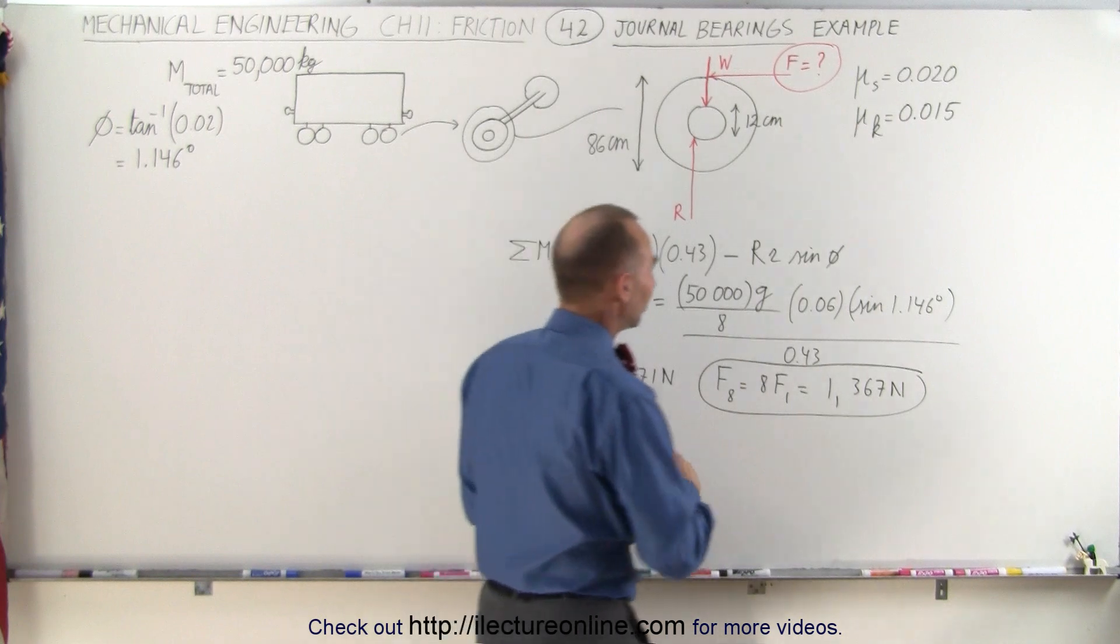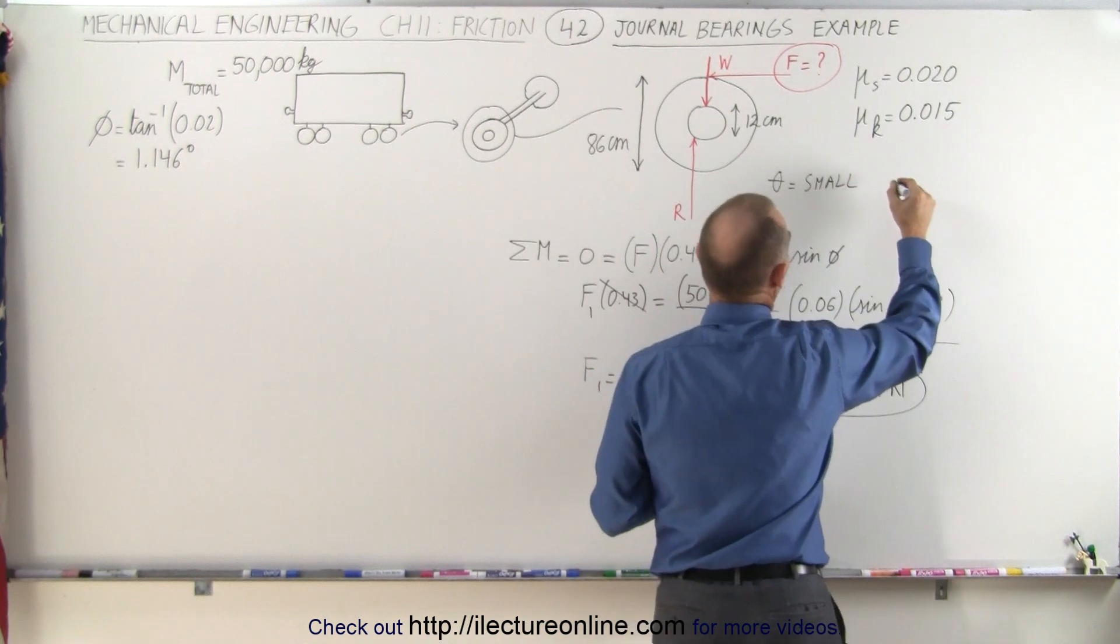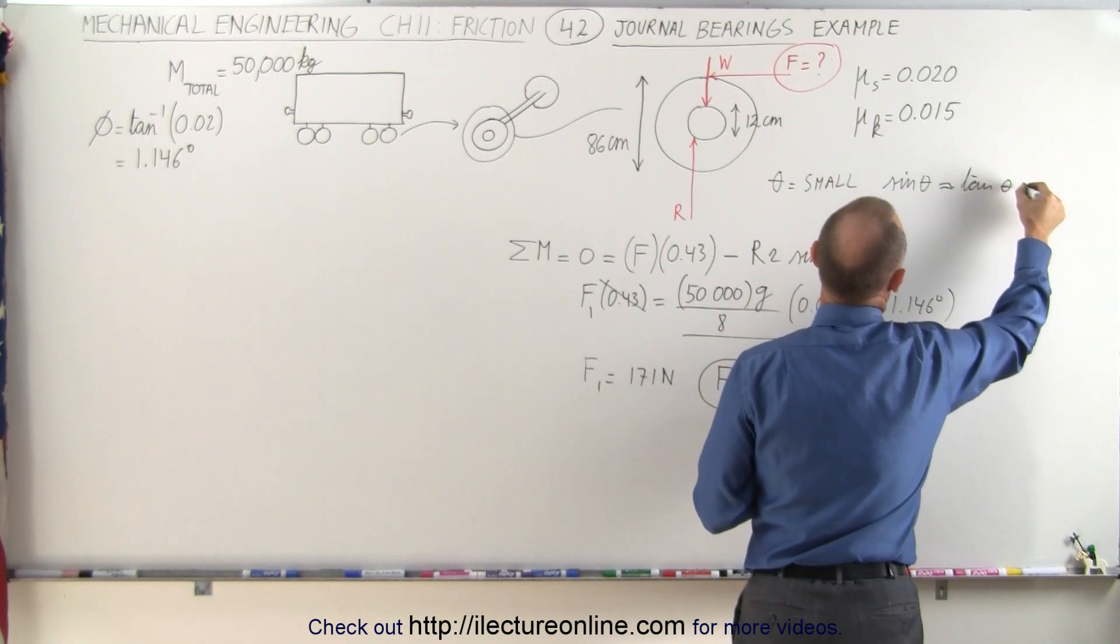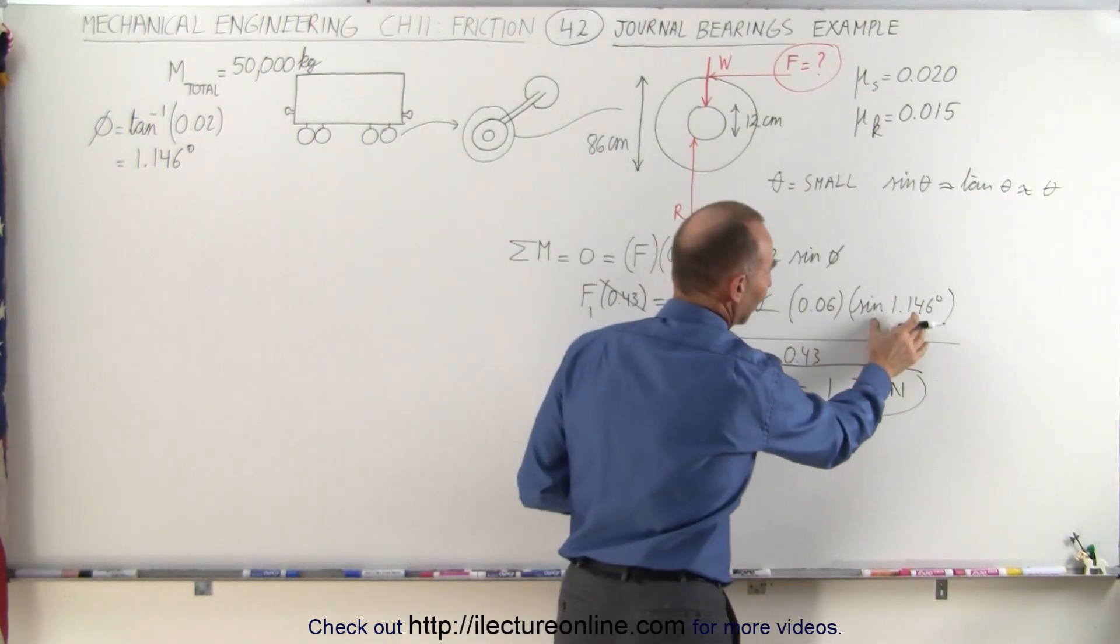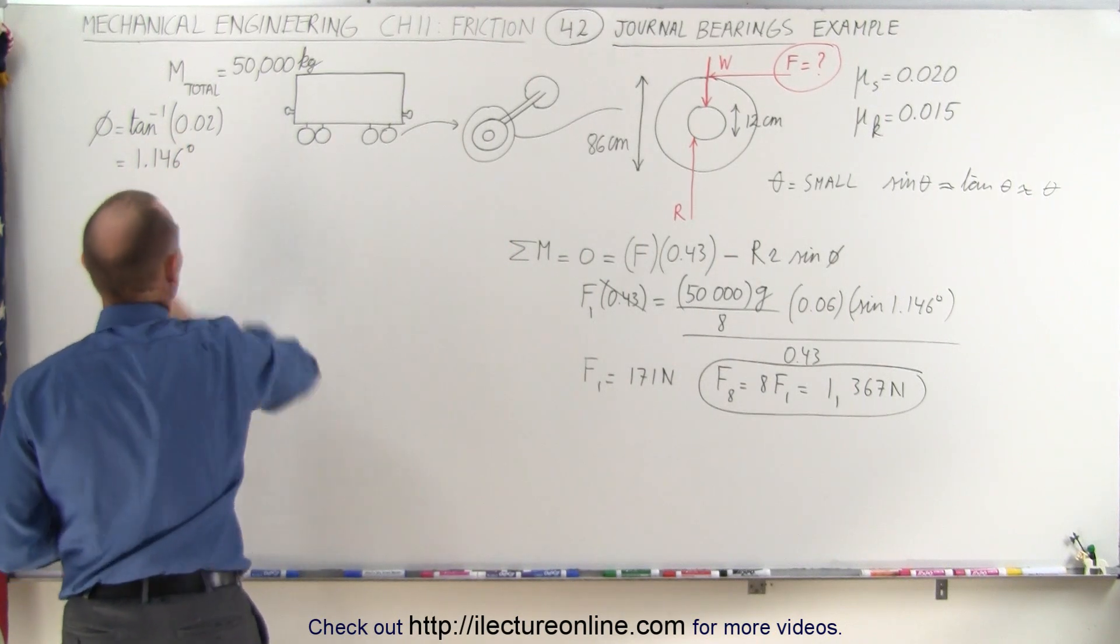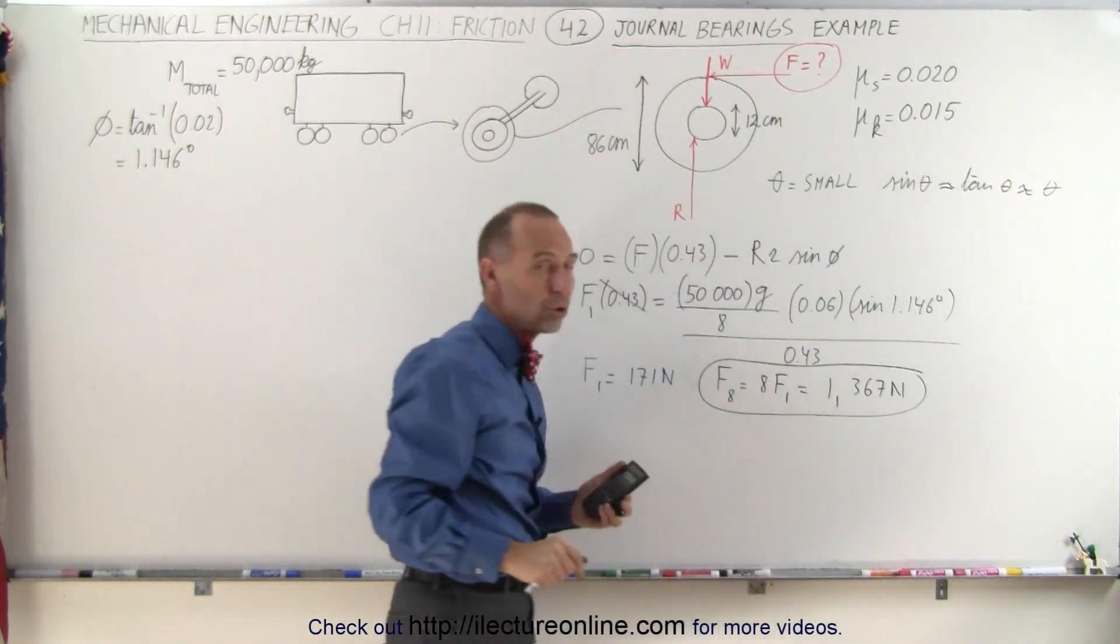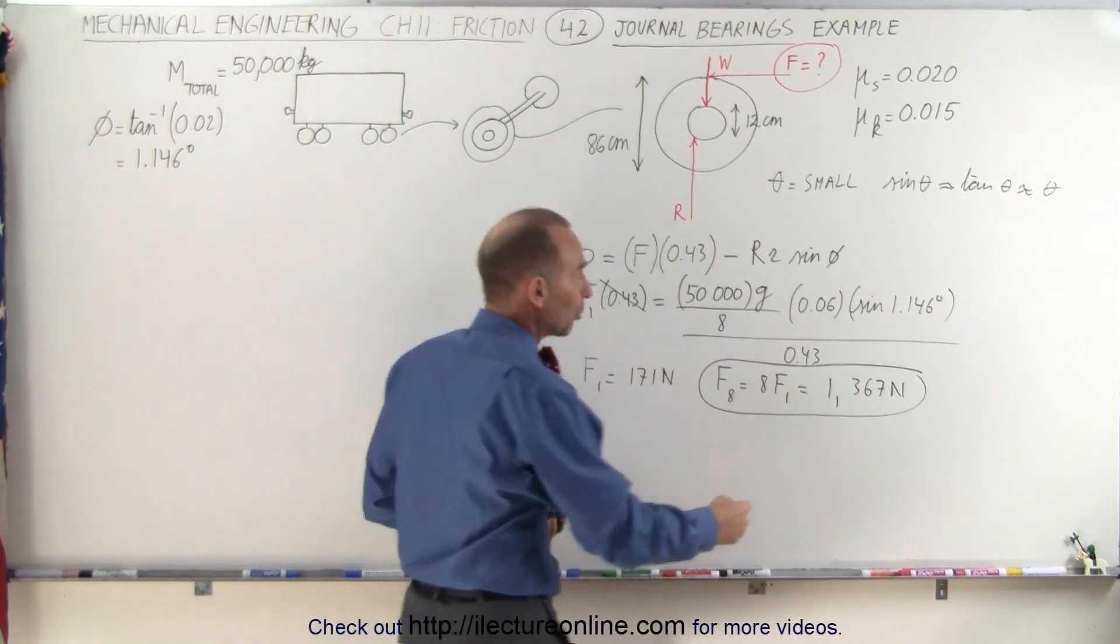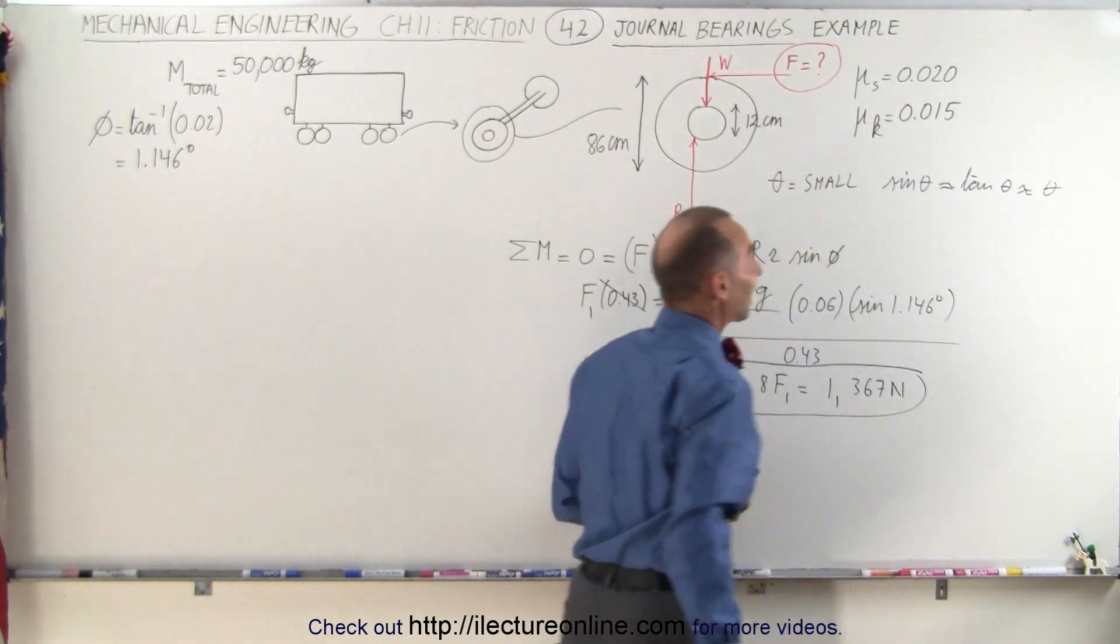For small angles, so for theta equals small, we can say that the sine of theta is approximately equal to the tangent of theta, is approximately equal to theta. So in other words, we can say that when you have the sine of a very small angle like that, and that angle of course comes from taking the arctangent of a very small number, if that number then changes to something different like 0.015 instead of 0.02, then really what we're saying is that the force required to keep it rolling would simply be three quarters this force because the coefficient of friction is three quarters the coefficient of static friction.